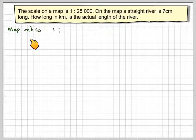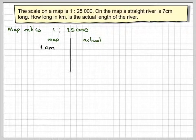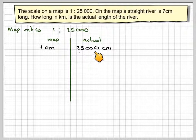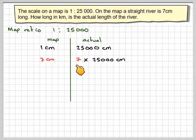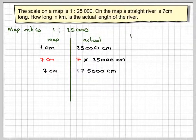So the map ratio is 1 to 25,000 — that's map to actual. This means that 1 centimetre is equal to 25,000 centimetres. Therefore, 7 centimetres will be 7 times 25,000 centimetres, which is 175,000 centimetres.